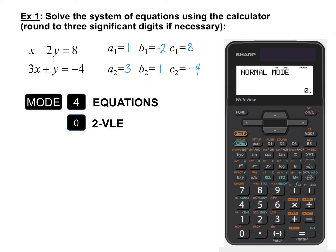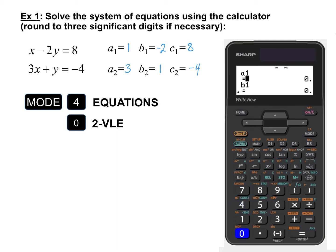On the calculator, hit MODE, then 4 for equation, then 0 for two-variable linear equation. We enter A1 as 1, hit equals; B1 is negative 2, hit equals; C1 is 8, hit equals; A2 is 3; B2 is 1; and C2 is negative 4. Now that we have all six values entered, when we hit equals we get the result: X equals 0, Y equals negative 4.